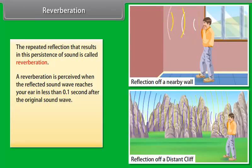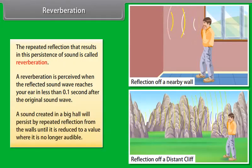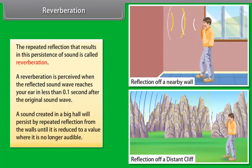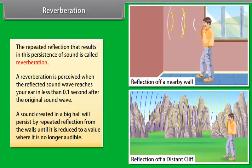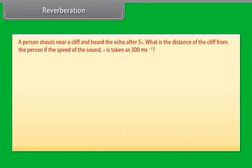Reverberation. The repeated reflection that results in this persistence of sound is called reverberation. A reverberation is perceived when the reflected sound wave reaches your ear in less than 0.1 second after the original sound wave. For example, a sound created in a big hall will persist by repeated reflection from the walls until it is reduced to a value where it is no longer audible.